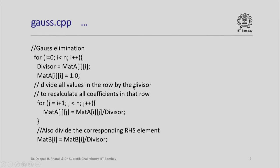But now, we divide all values in the row by that divisor. Observe that we are doing a transformation to recalculate all coefficients in that row for j equal to i plus 1 to n minus 1, because it is the i th row that we are talking about. So, we recalculate i comma j th element of mat A by dividing that element by divisor. We also divide the corresponding right hand side element. So, mat B[i] is also divided by divisor.